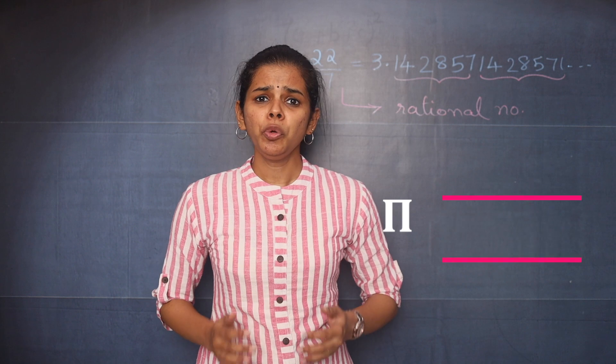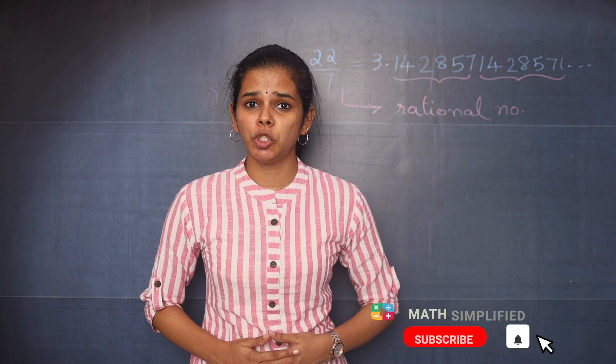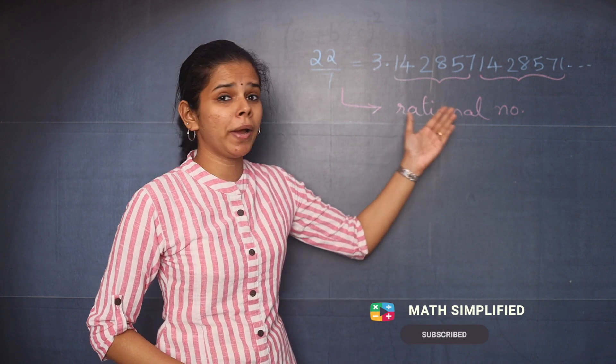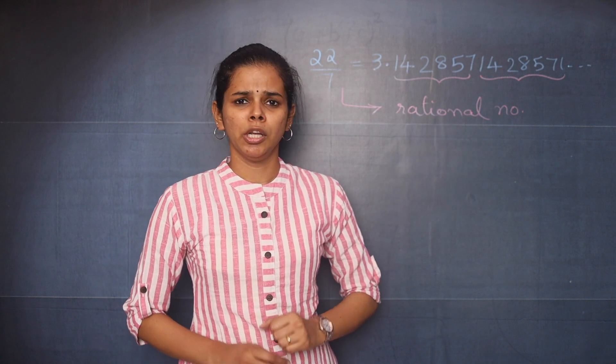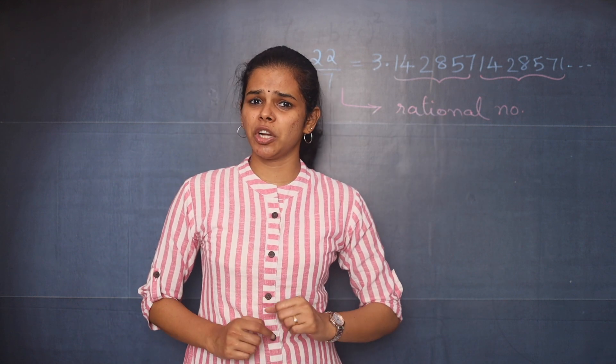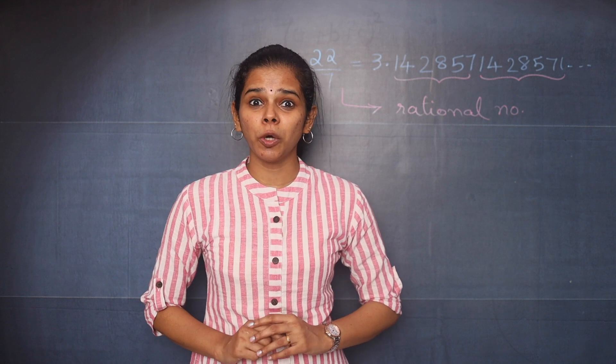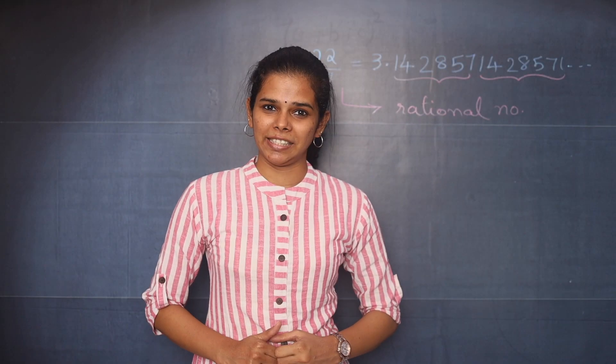You know that pi is equal to 22 by 7, and we just proved that 22 by 7 is a rational number. So pi must be a rational number, but that is not true. Why? Let's see the reason.